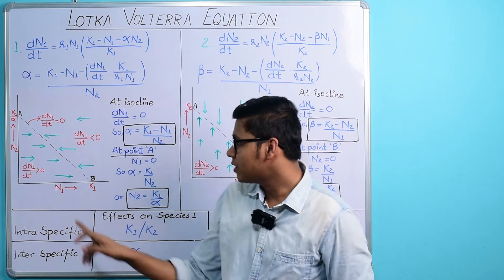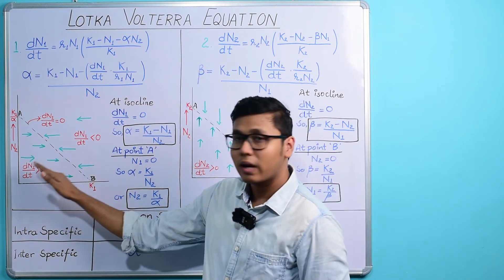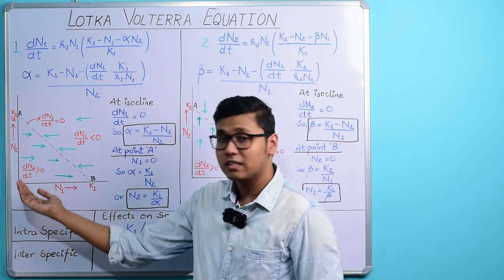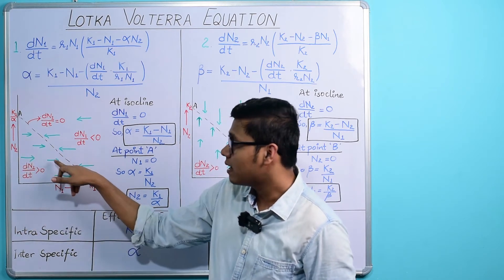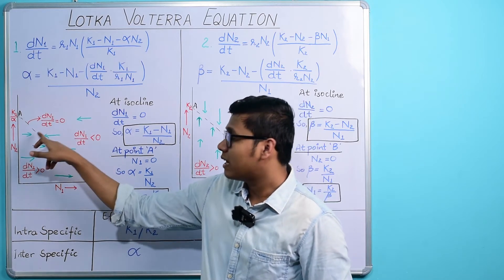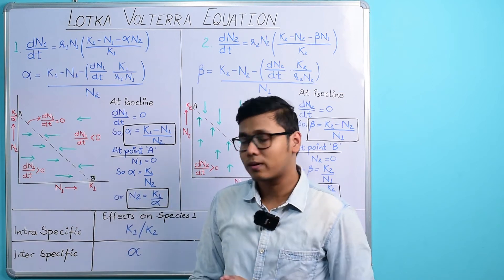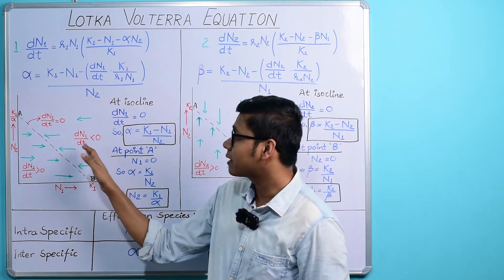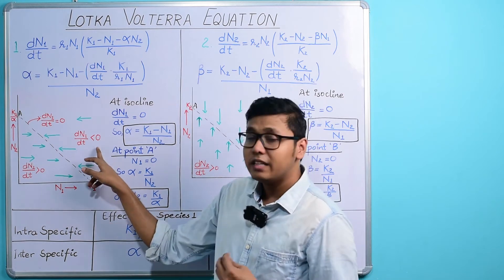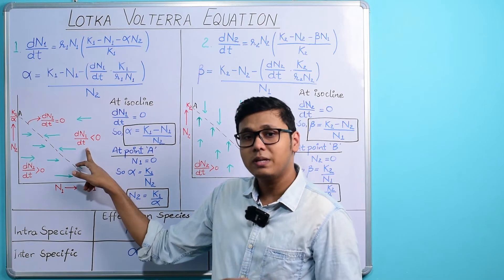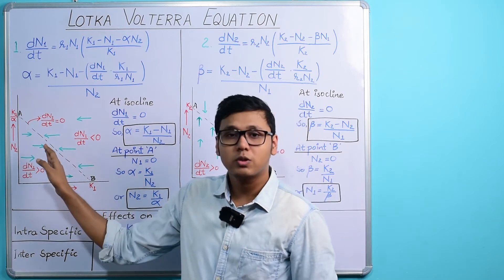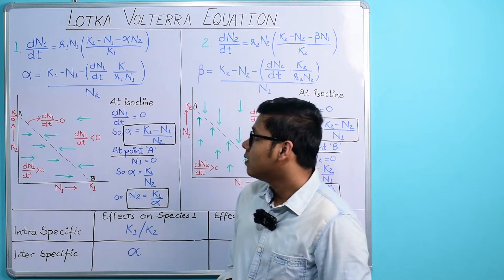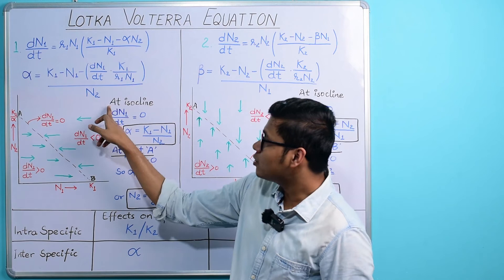Before the isocline, the growth rate is positive and dN₁/dt > 0, so the population will grow and move towards the isocline. When it reaches the isocline, the growth rate is 0 — there is no further growth. But if the population size is already higher than the carrying capacity, there will be negative growth and dN₁/dt < 0. The population will then start moving back towards the isocline to try to achieve the carrying capacity.